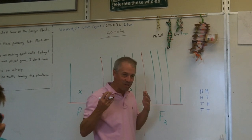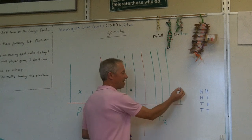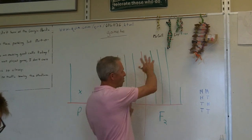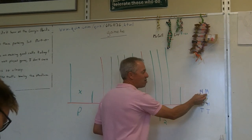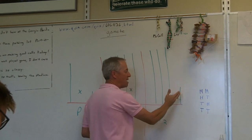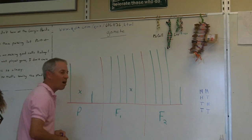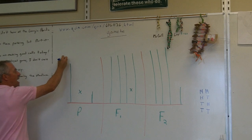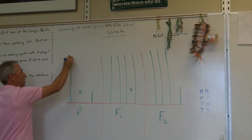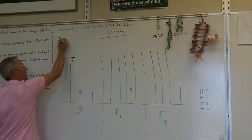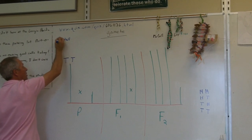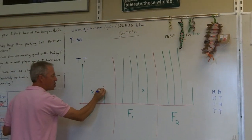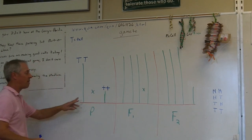This is what Mendel figured was going on in the pea plants — the short one was like getting two heads on coins. Instead of flipping coins, he thought there were two genes for height that each plant has. He called them alleles. He said this first plant probably had two tall alleles — he called the tall allele big T. And he thought the little plant had two short alleles — he called that little t, little t.